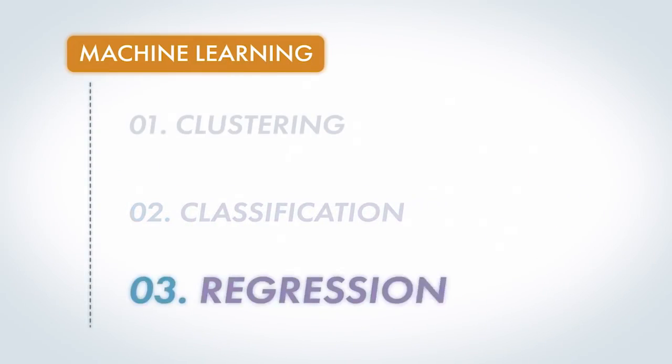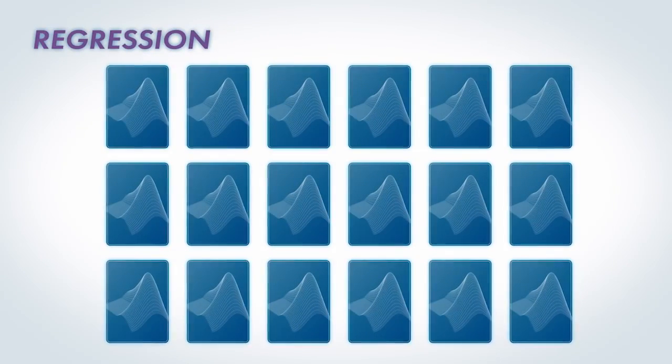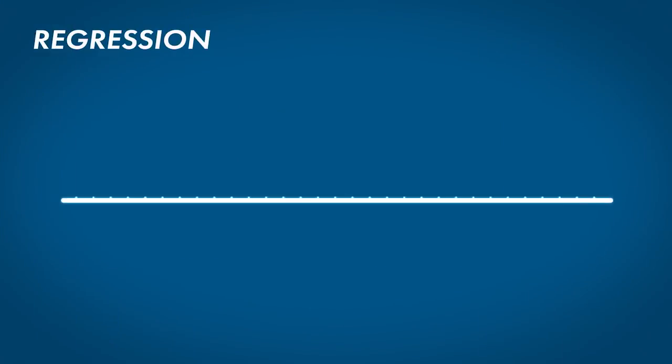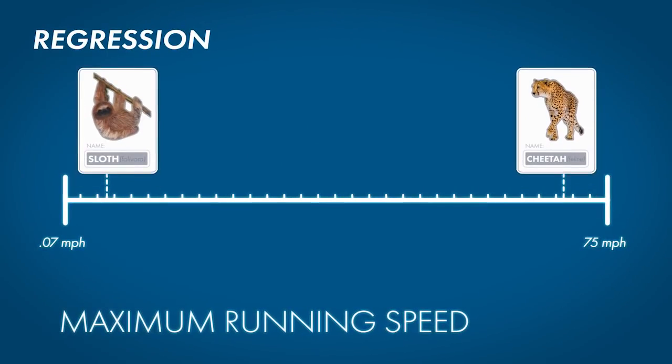The third type of machine learning is regression, where instead of classifying into a finite number of outputs, we're trying to find an answer on a continuum, like the maximum running speed of an animal.